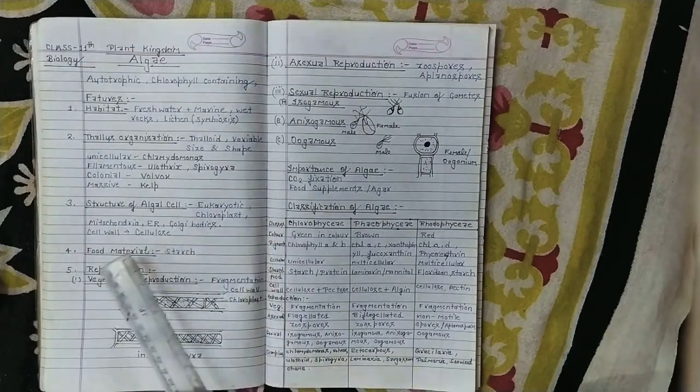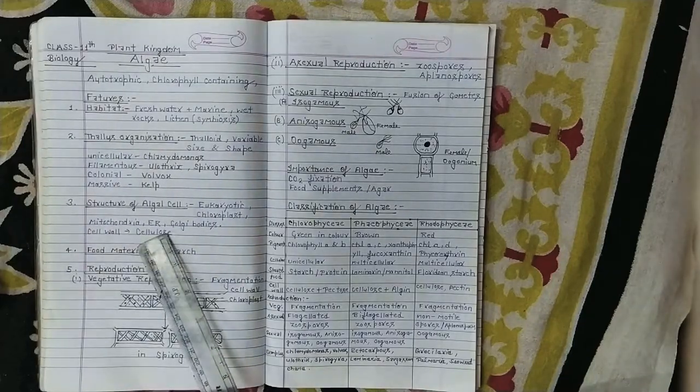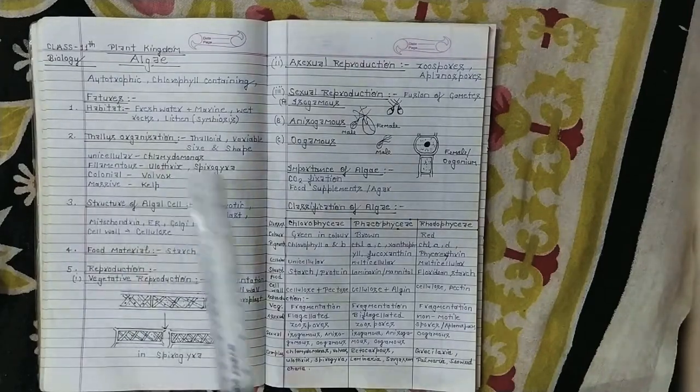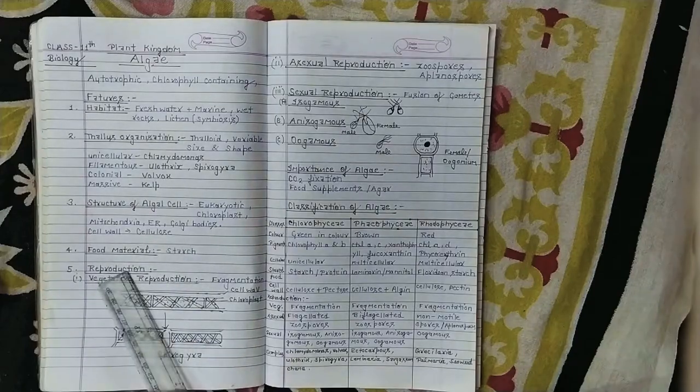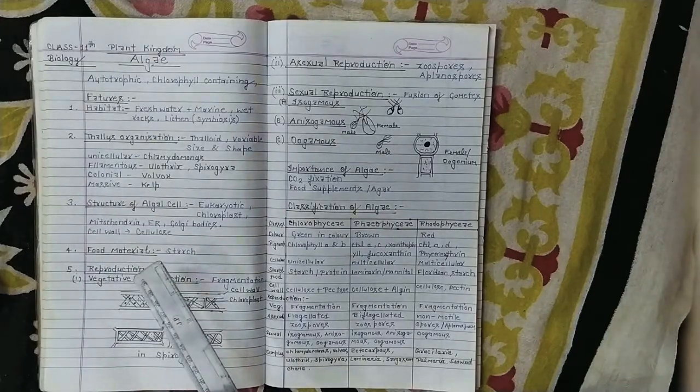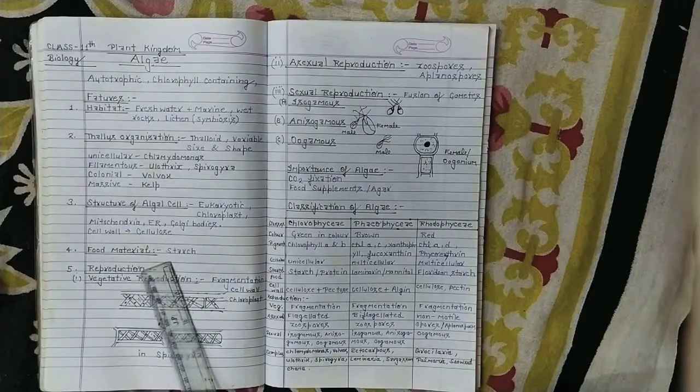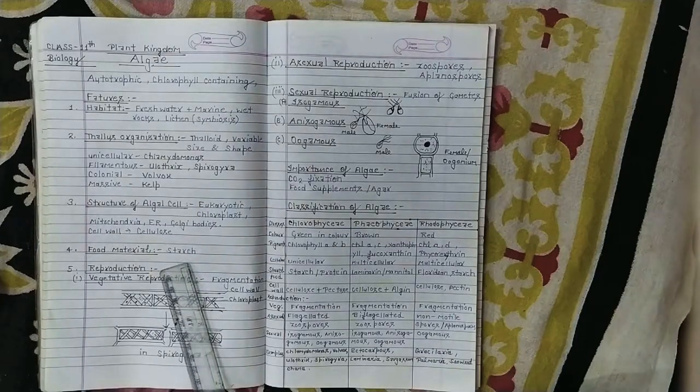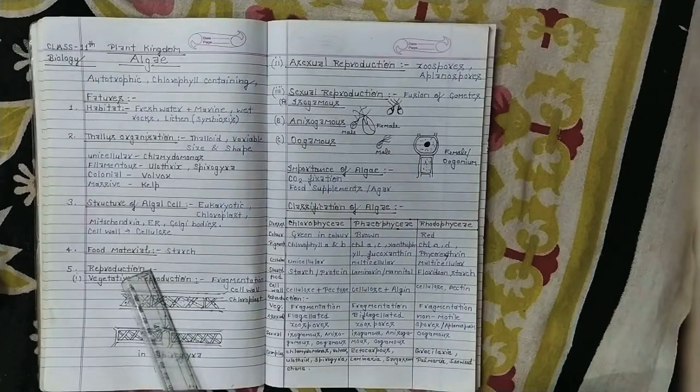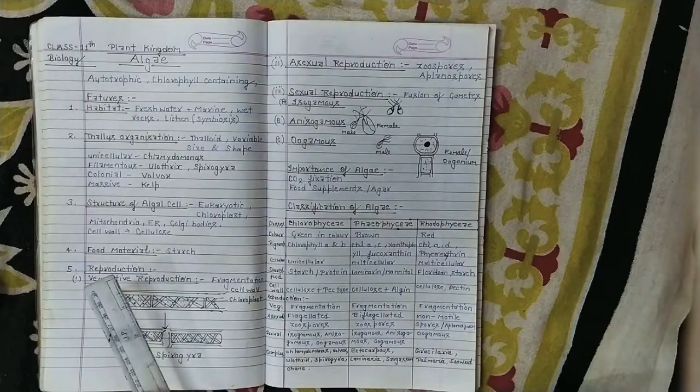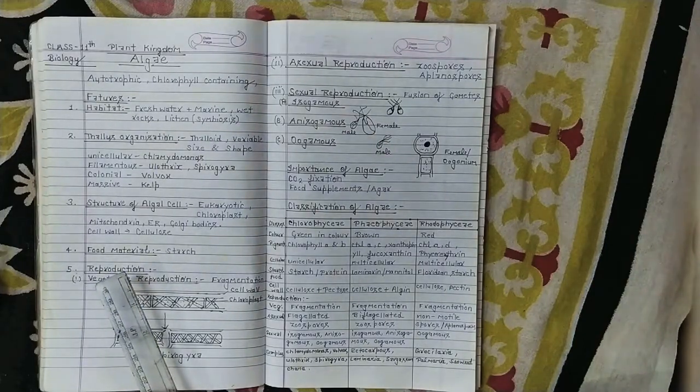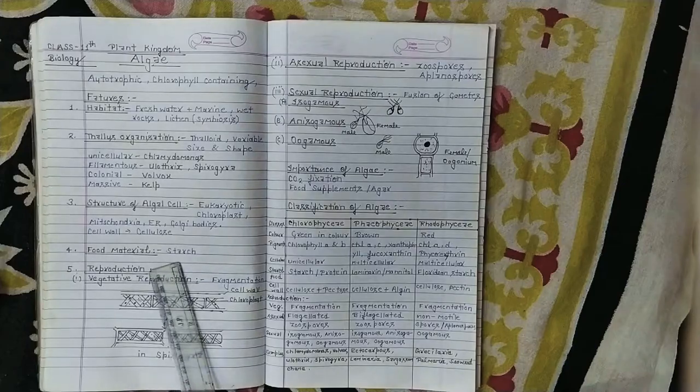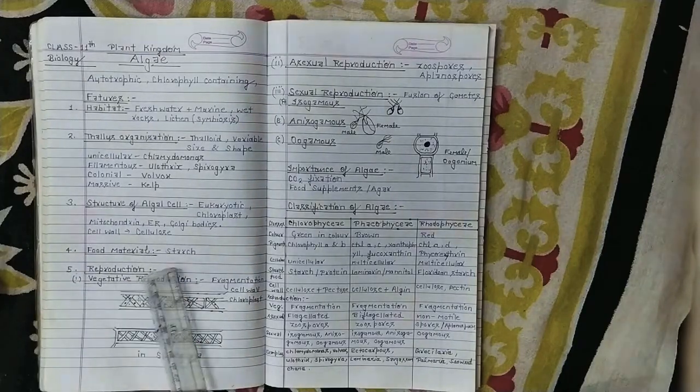Eukaryotic and have chloroplast. In the next topic, in chapter 9, we will study the biomolecules. Carbohydrates are three types: monosaccharides, disaccharides, and polysaccharides. We will study starch as an example of a carbohydrate.